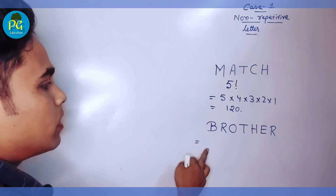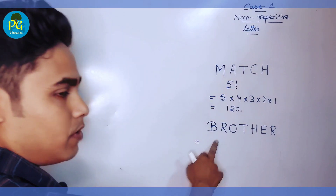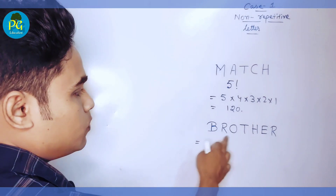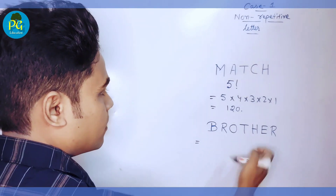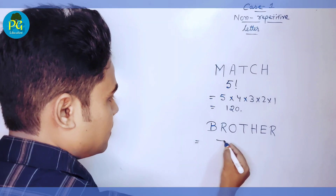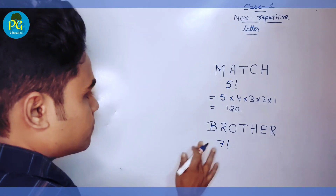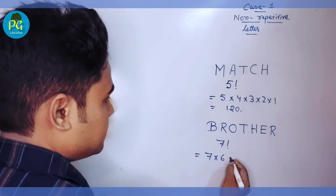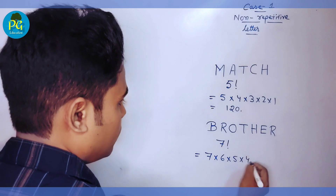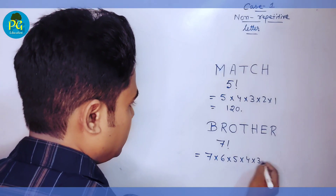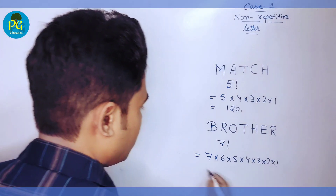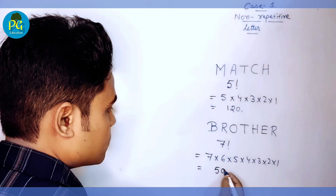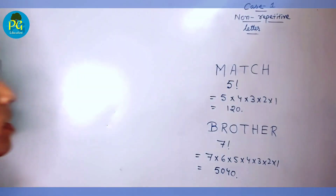The second word is BROTHER. How many ways can we write BROTHER? Counting the letters: 1, 2, 3, 4, 5, 6, 7. So it is 7 factorial. 7 factorial means 7 × 6 × 5 × 4 × 3 × 2 × 1, which is equal to 5040.